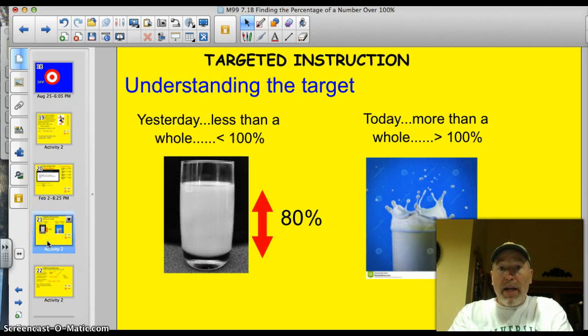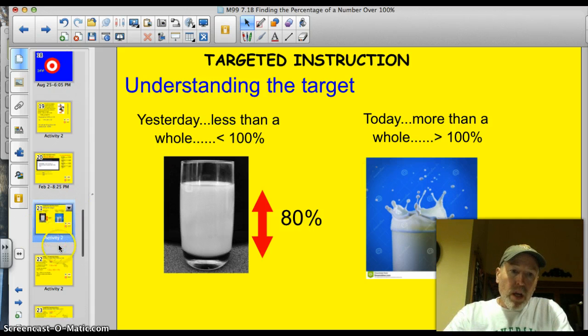First of all, let's just see if we can't wrap our mind around the target. Yesterday, we were working with percentages that were less than 100, like this glass. It's not quite full. It's maybe 80% full. Today, we're going to work with ones that are more than 100, or greater than 100%, like this glass, which is overflowing.